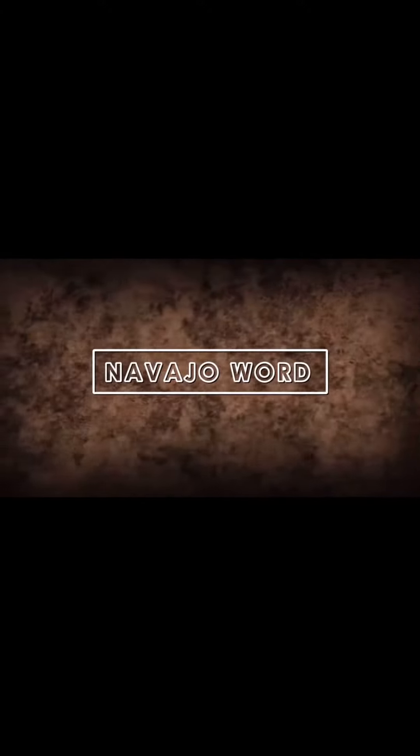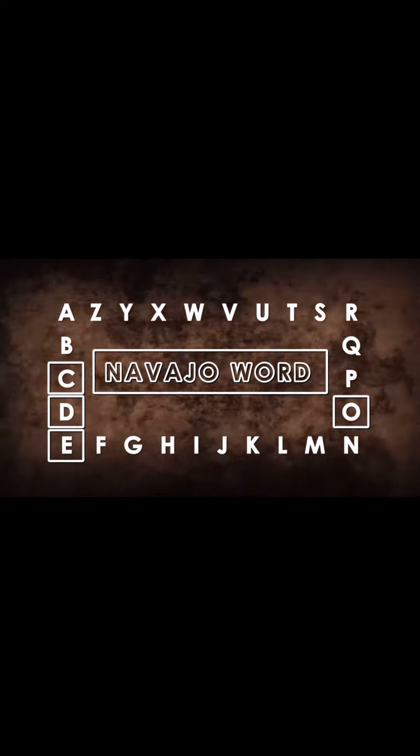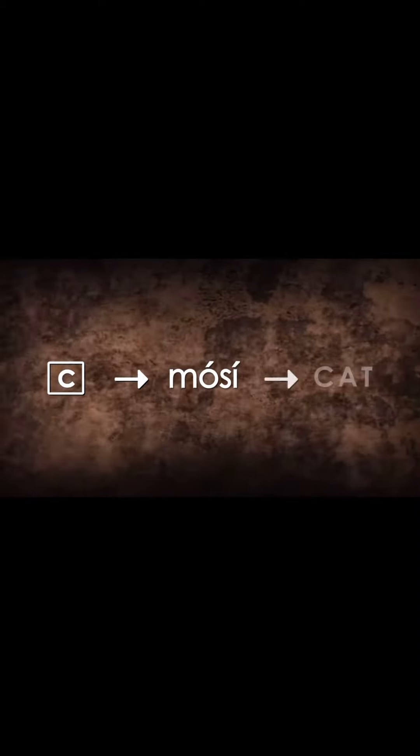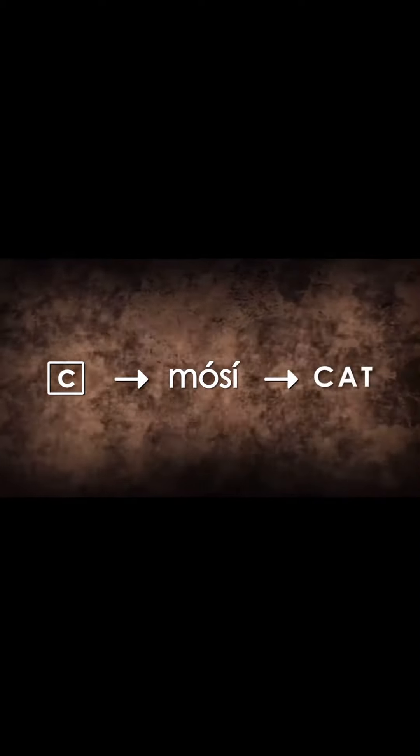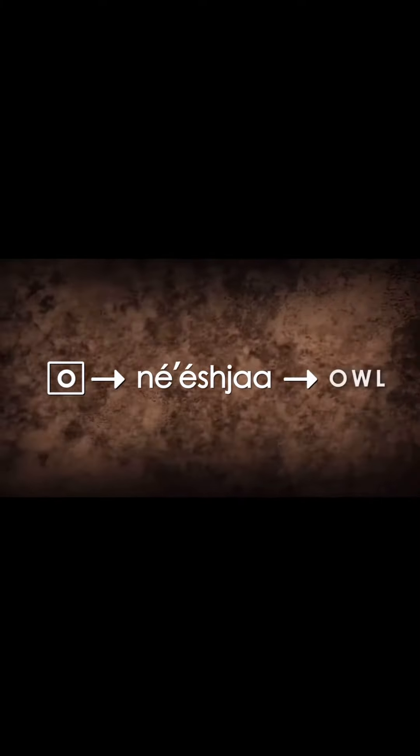Coders assigned a Navajo word for each letter of the alphabet and spelled out entire messages to each other. For example, spelling out the word 'code' would work like this: they replaced the letter C with 'mossi', the Navajo word for cat. The letter O was replaced with 'nesja', the Navajo word for owl.